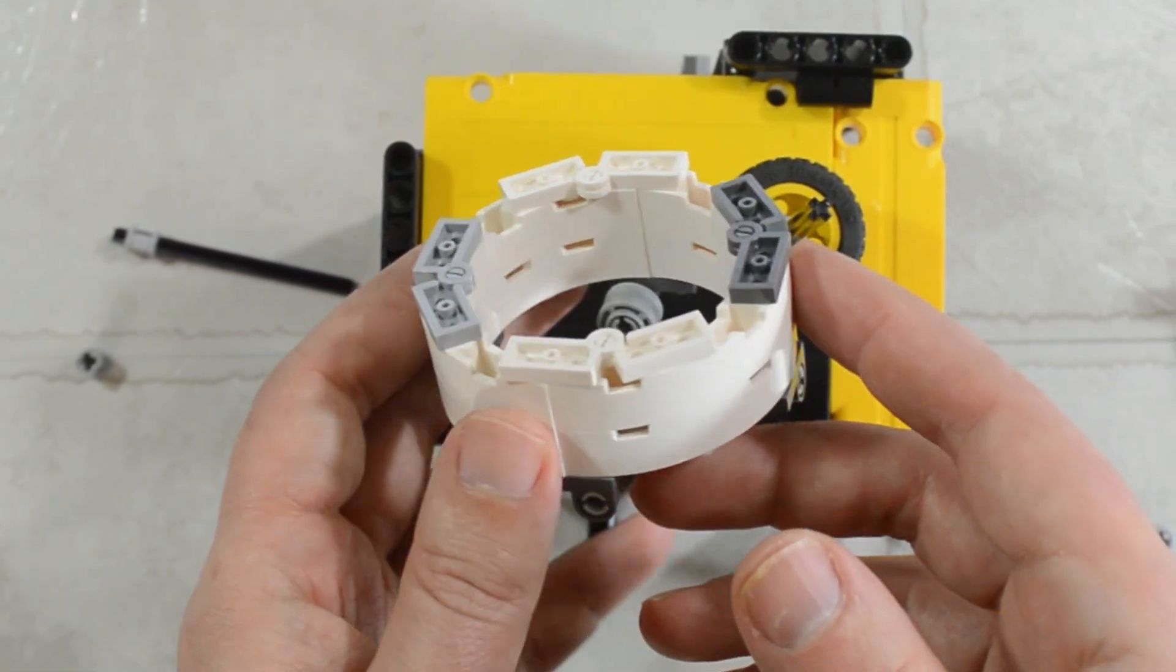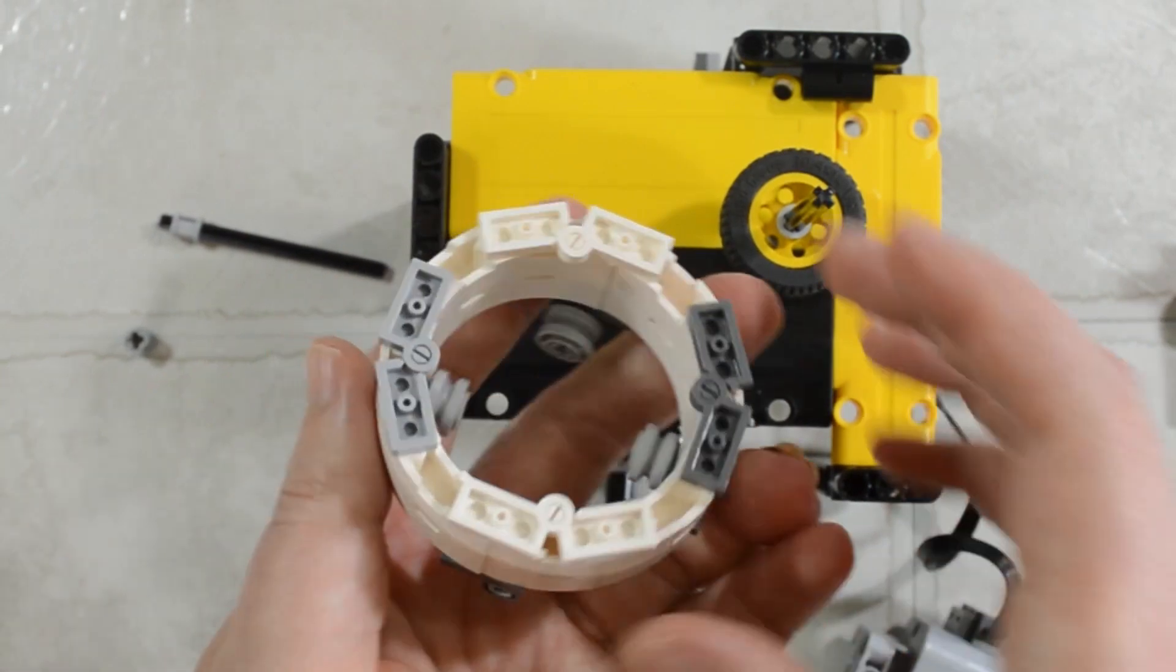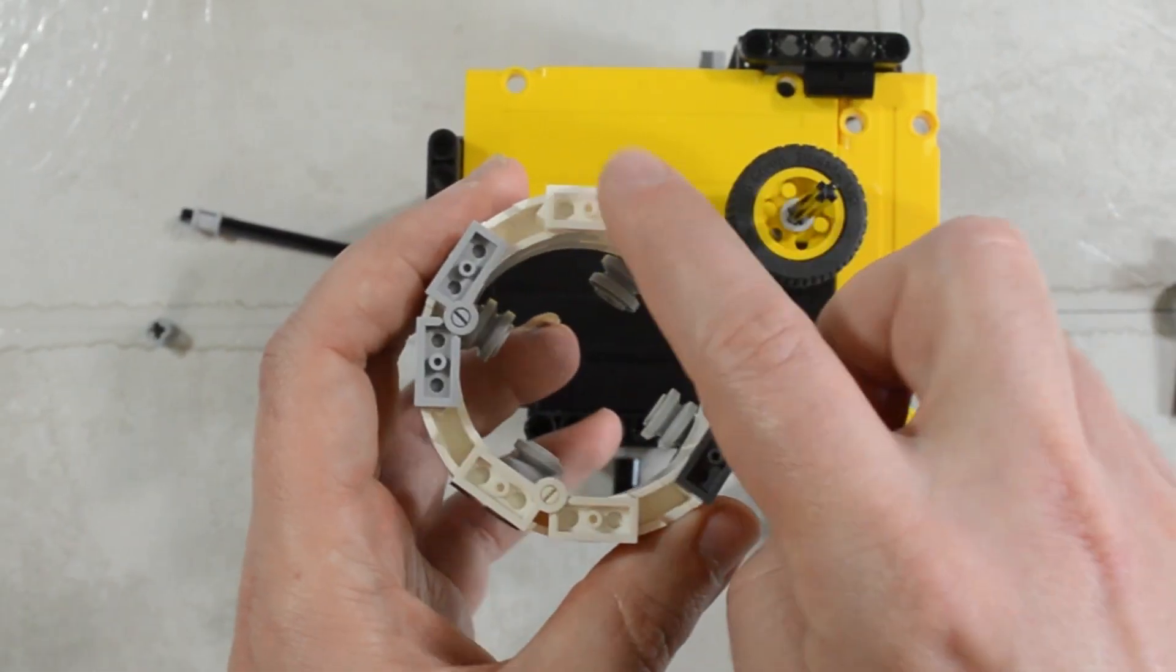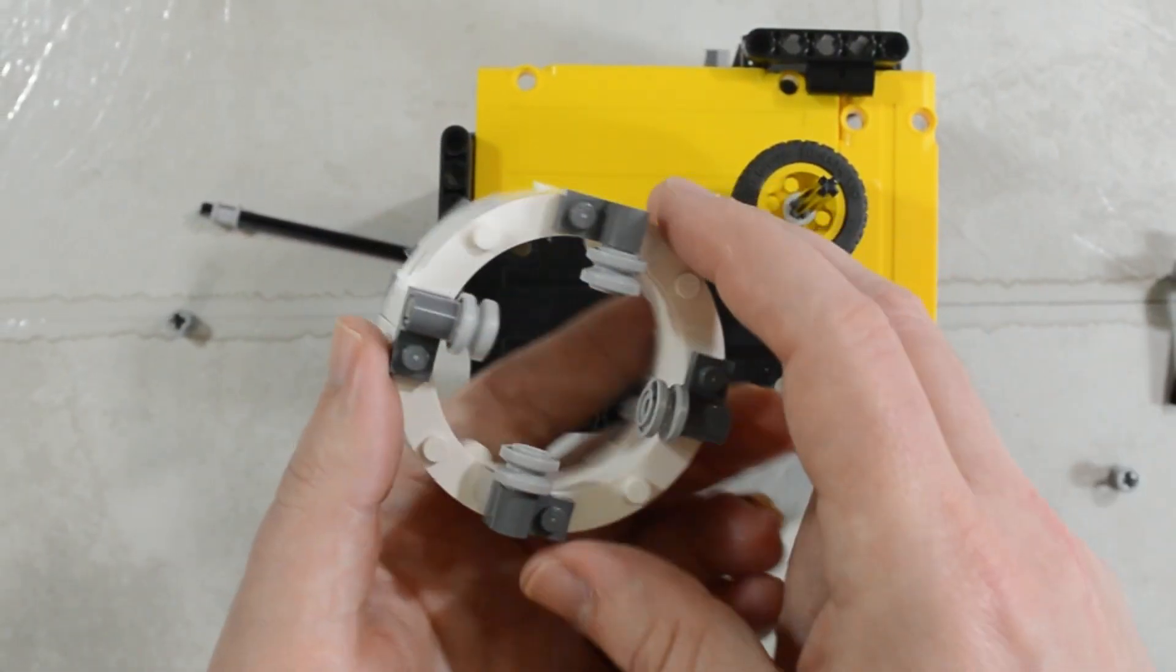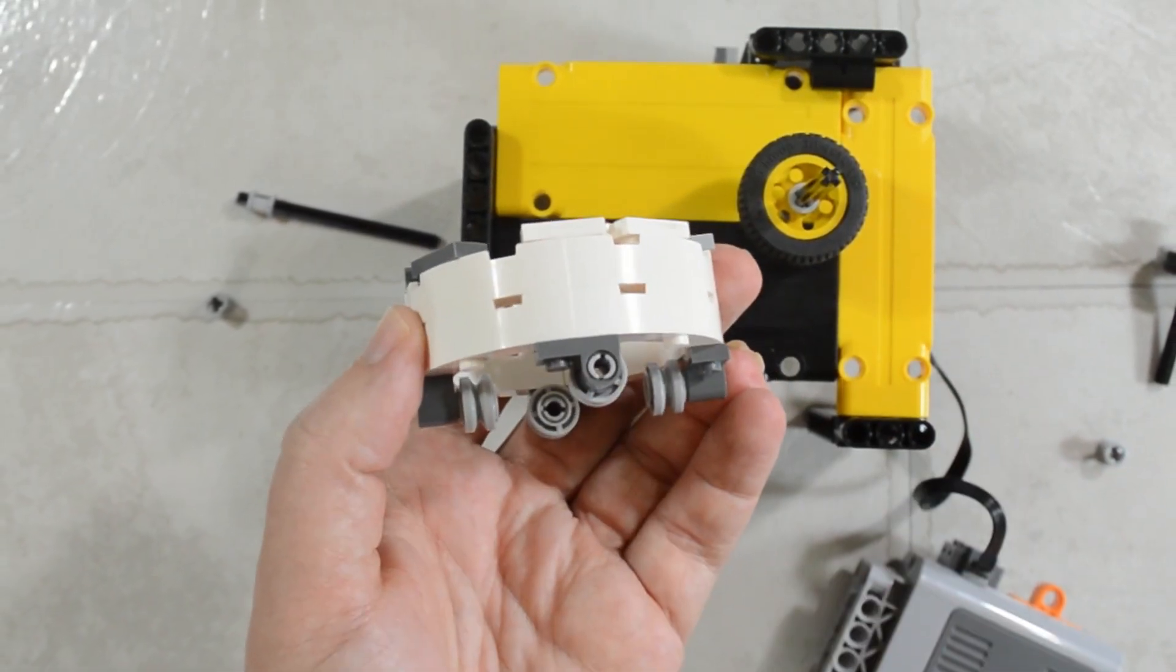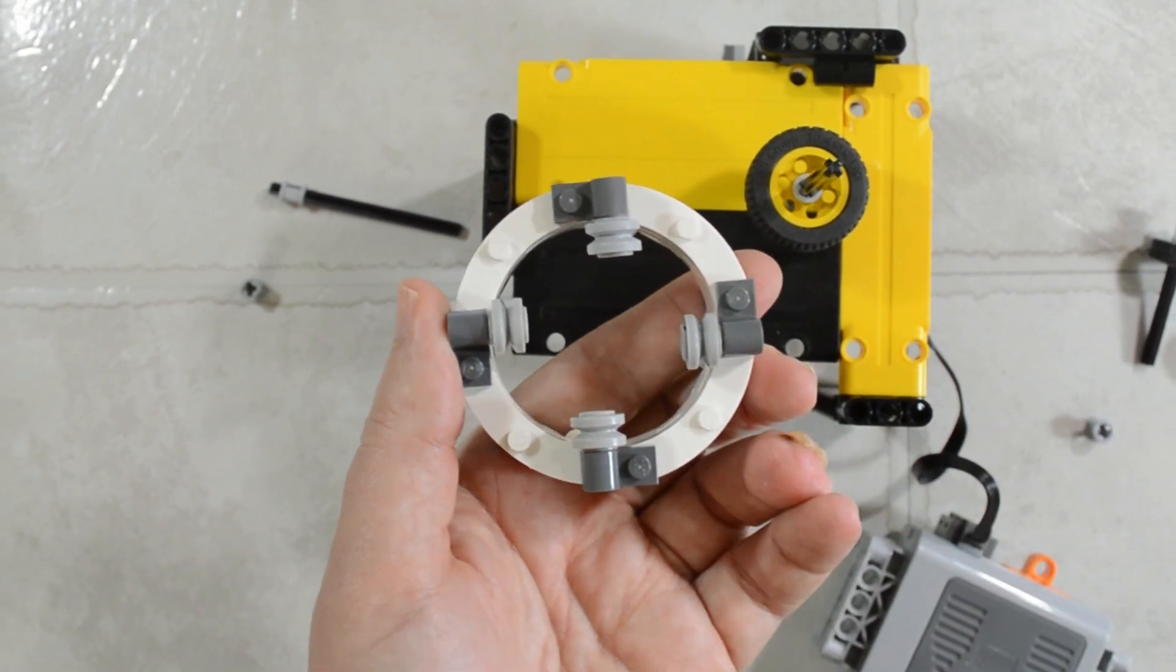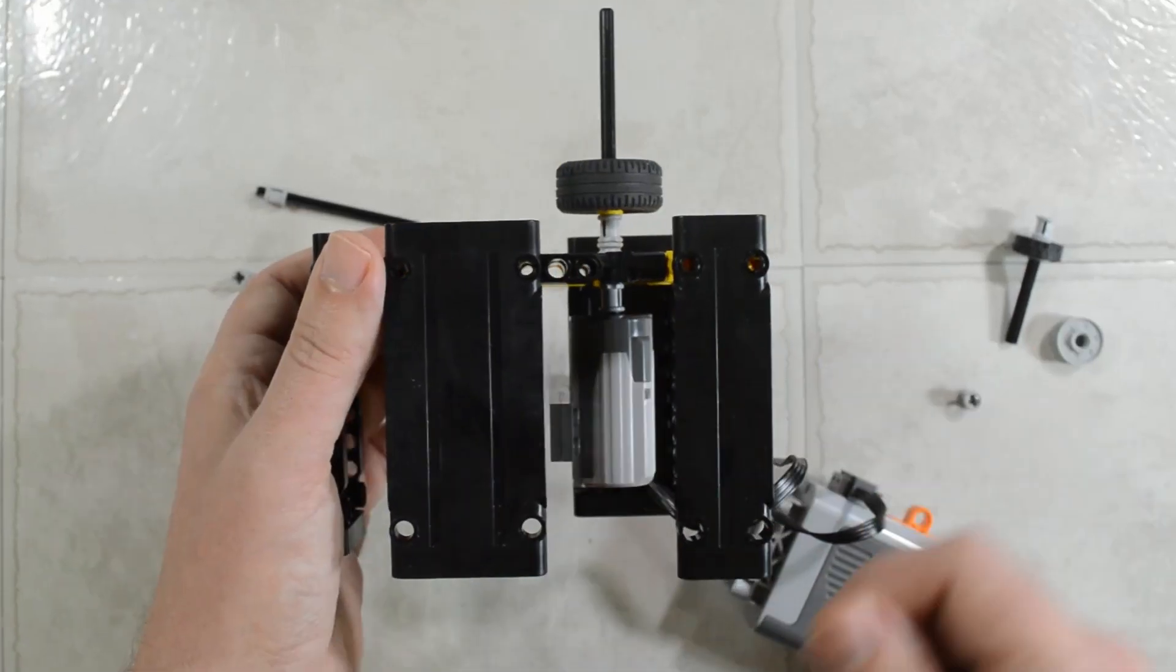Here's our round section. It's built with some curved bricks and hinges locking those together. On the bottom we have the plate with the pinhole in it and some wheel rims to act as bearings. The main drive is very simple—we just have our motor connected directly to our drive wheel.